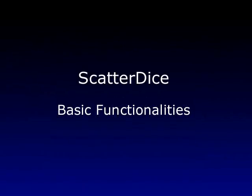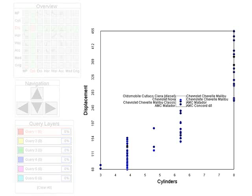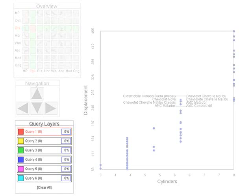The ScatterDyze application is a prototype implementation of our scatterplot matrix navigation technique. ScatterDyze consists of four main components: a scatterplot, a scatterplot matrix, a query layer control box, and a navigation bar.